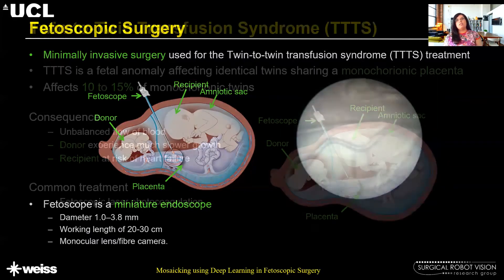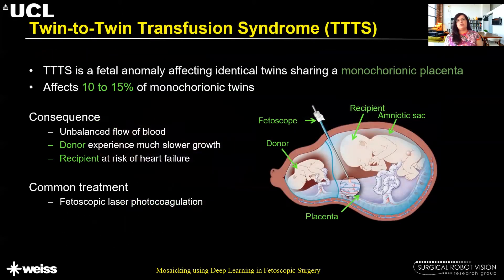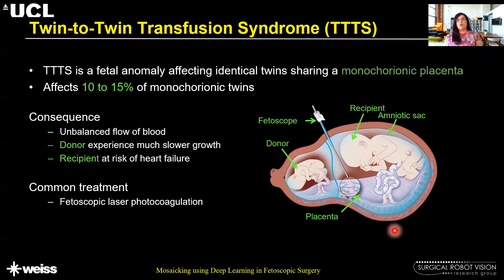So what is twin-to-twin transfusion syndrome? Basically it is a fetal anomaly affecting identical twins sharing a monochorionic placenta. What happens in this condition is that the flow of blood becomes uneven between the two fetuses. As a result, the donor experiences much slower growth while the recipient is at risk of heart failure because of the excess blood it is receiving.